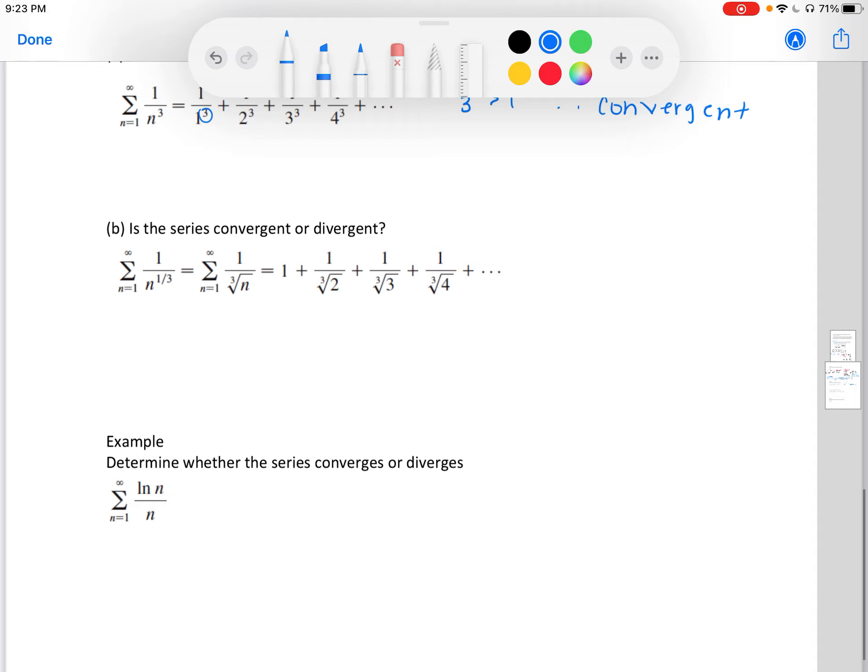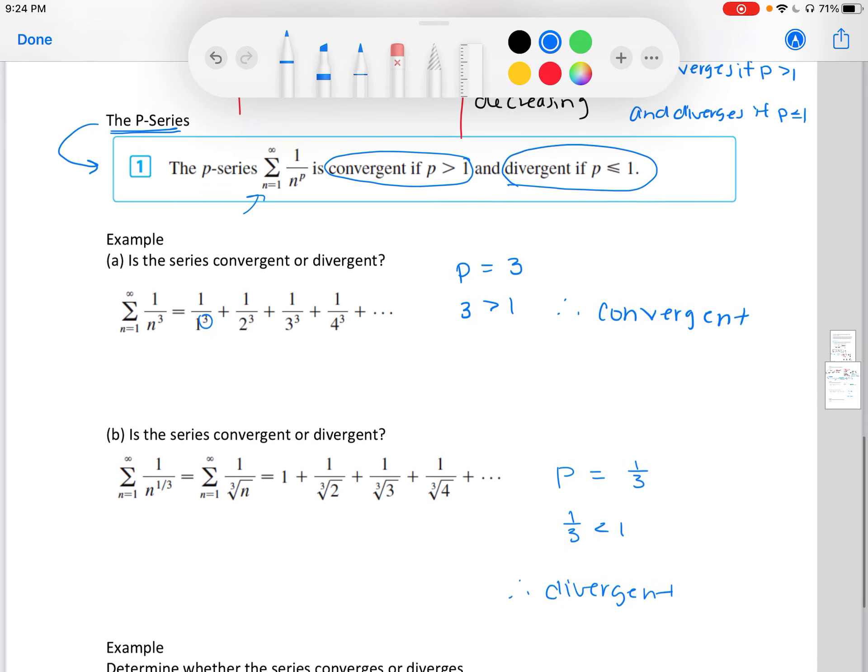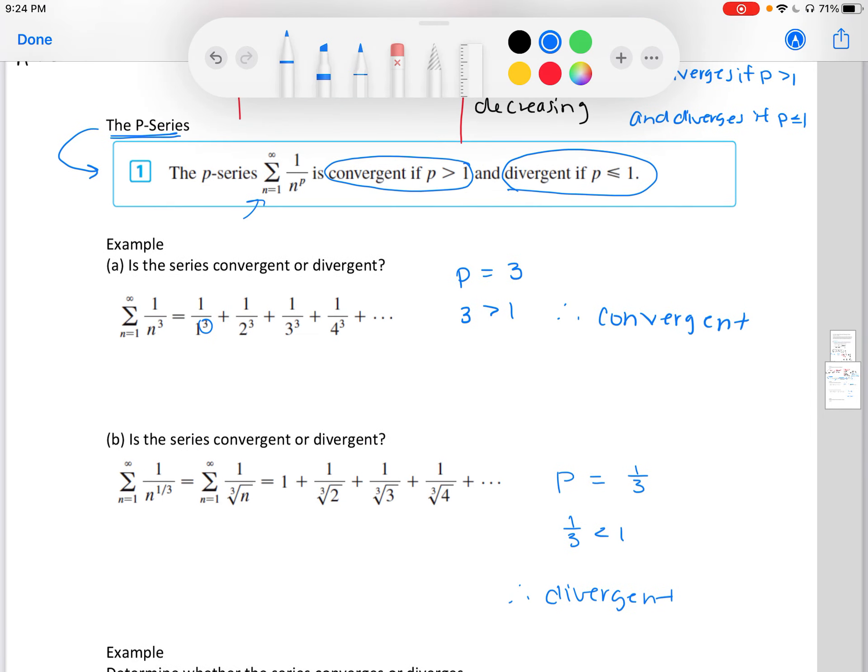Next problem. Our exponent is a rational exponent. So our p is the cube root or a 1/3 exponent. 1/3 is less than 1, therefore it's divergent. Pretty straightforward. P-series is very helpful, but not all series fall under this p-series veil.